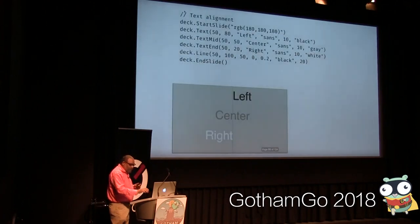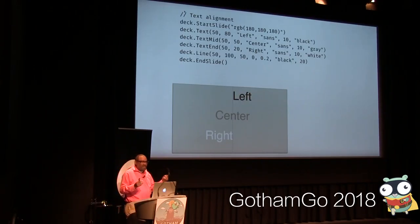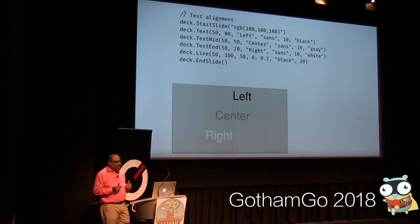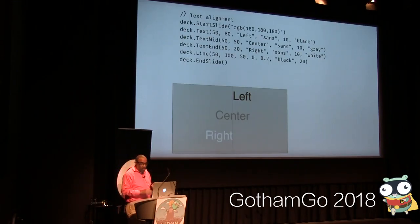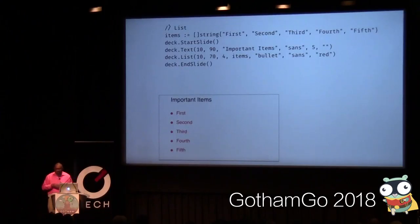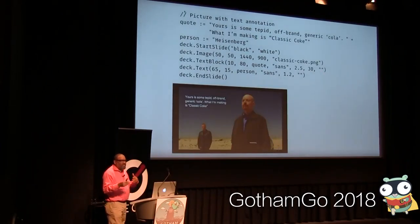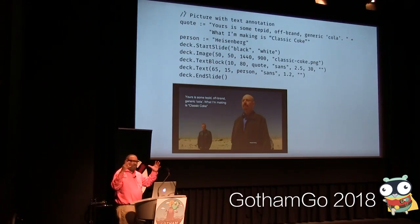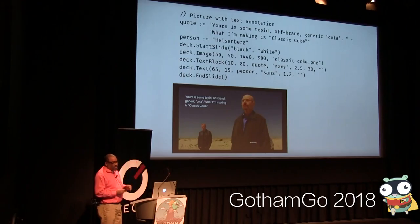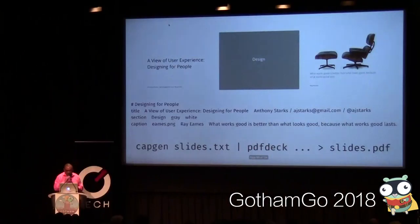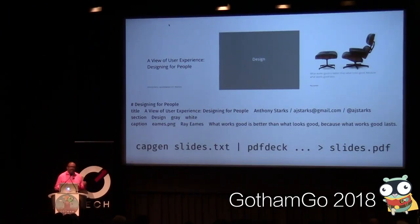Here's a program that makes slides. You start with your deck object, start and end your slides, and then have your code in between. Here's an example of a very simple slide that sets the background and aligns text to the left, center, and right, then draws a line right down the middle. Because it's a Go package you can use standard Go data like slices to make lists — you just hand it a slice and you get bulleted lists. One thing I like to do is have a hero image with text around it — here's how to make that particular slide.